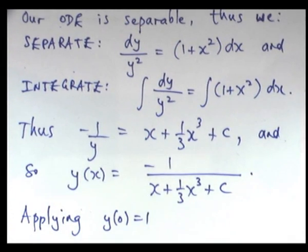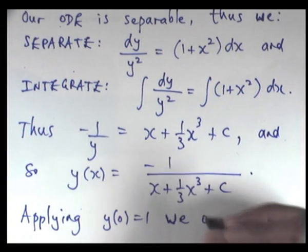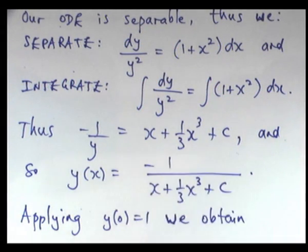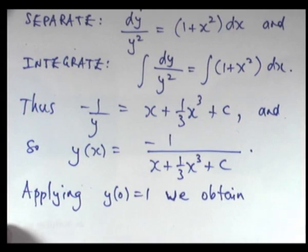So the initial condition is y of 0 equals 1. We obtain the following. All right, so I go up to here. I substitute in x equals 0, and I know the whole thing has to be equal to 1.